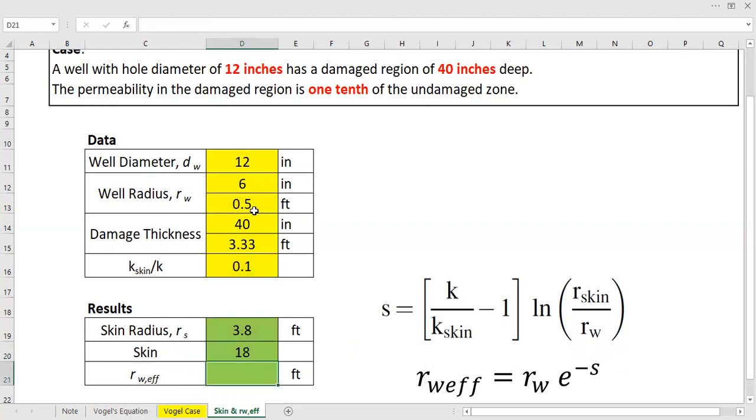Close close. All right, so the skin factor is 18, positive 18. So it's quite big. With 40 inches deep damage thickness and the permeability of the damaged region of one-tenth of the undamaged zone, we have skin factor of positive 18, which is quite big. And what about the effective wellbore radius caused by this big skin factor?